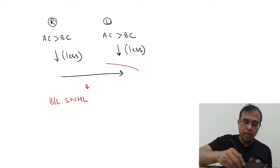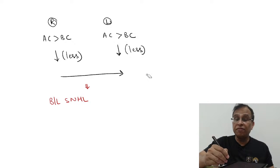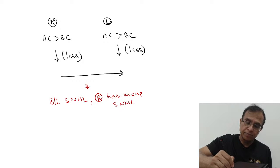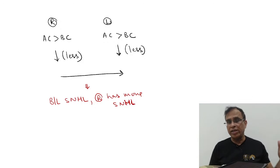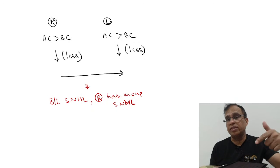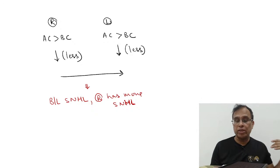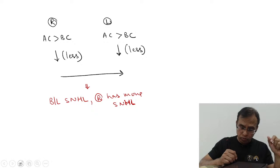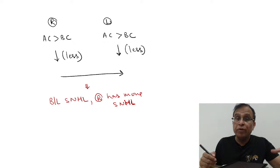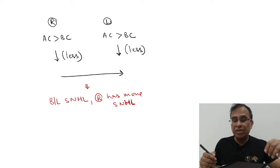In bilateral sensorineural hearing loss, Weber's goes to the better side. So left is the better side, meaning right is the worse side. So the right has more SNHL than left. It is bilateral SNHL, but one is more and one is less. The right has more SNHL because in SNHL, Weber's goes to the opposite side. The Weber's arrow points to the left side, which means right is more SNHL. If you do not understand, you have to go back and look at your basics.